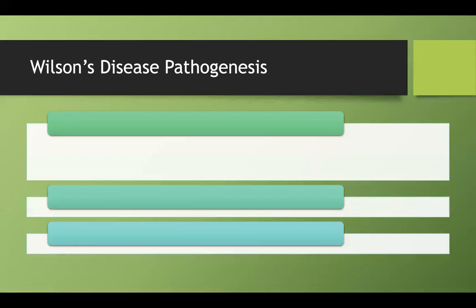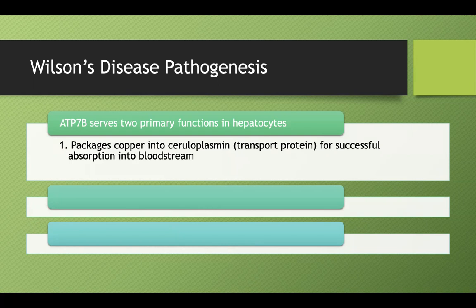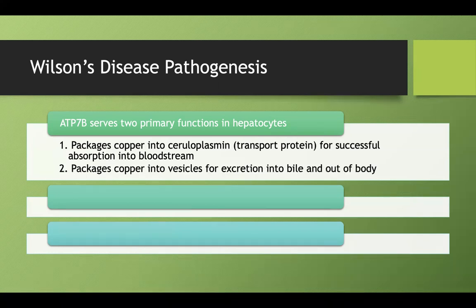Moving back to Wilson's disease, the ATP7B protein serves two primary functions in hepatocytes. First, it can take copper and package it into the transport protein ceruloplasmin, which can then be successfully released into the bloodstream. Second, it can package excess copper into vesicles that are excreted into the bile and out of the body.